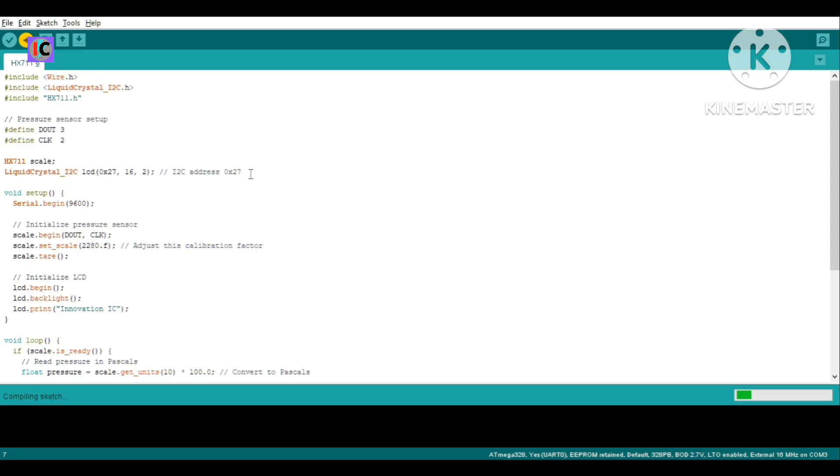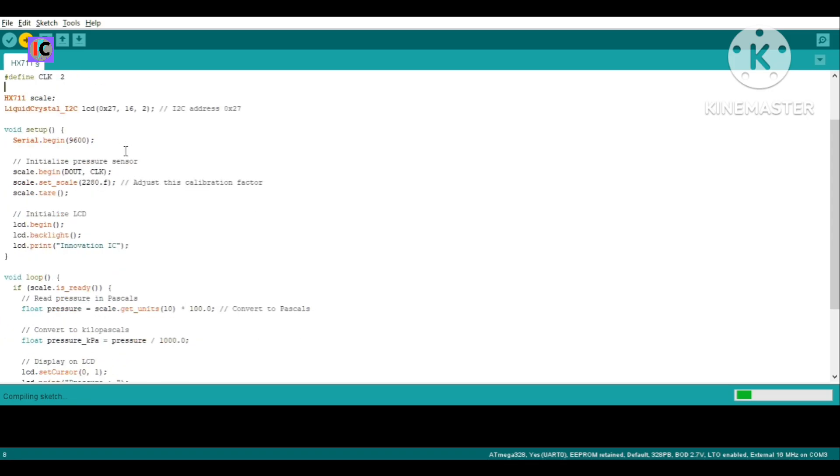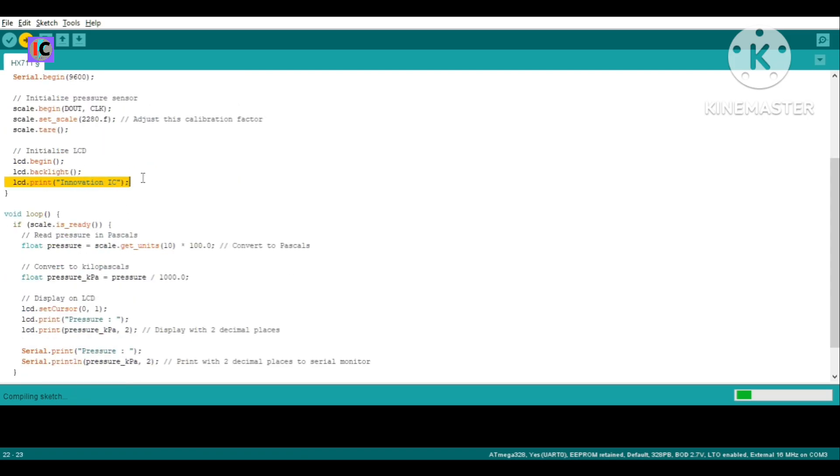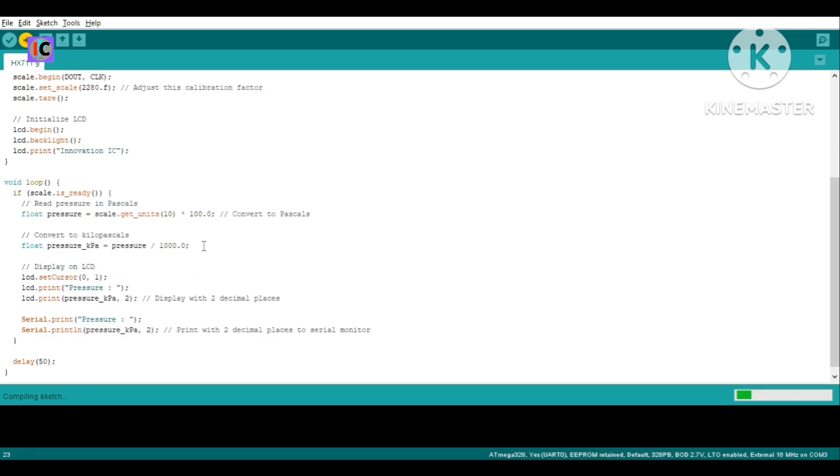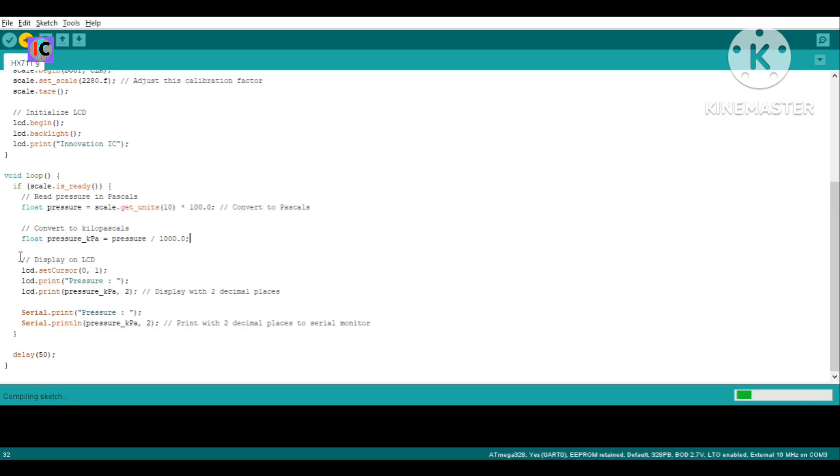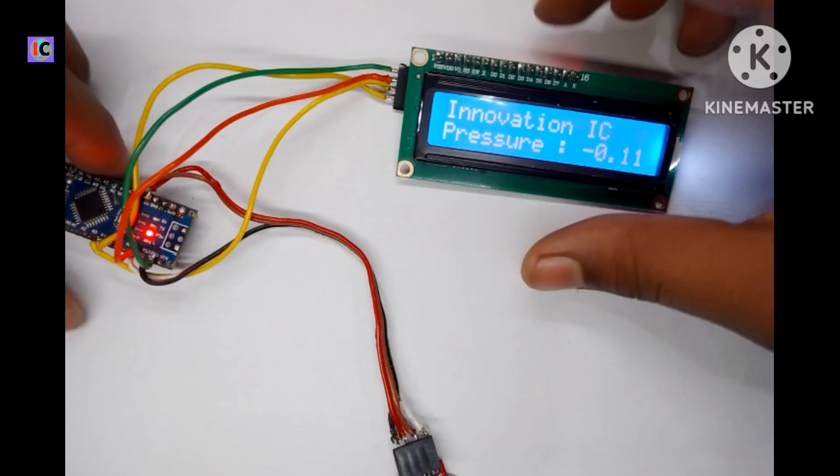Like the I2C liquid crystal display and wire.h library for the connection with I2C port. Here we configured the sensor pins and the data pins. For the formula here we use a conversion system for converting the raw data of the sensor to a valuable or usable quantity.